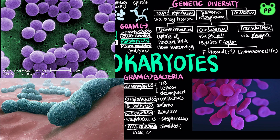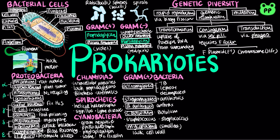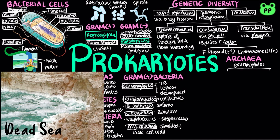Archaea are prokaryotes that share certain traits with bacteria and other traits with eukaryotes. The comparison among bacteria, archaea, and eukarya has been covered in a separate video titled "3 Domains of Life." Some archaea live in extreme environments and are called extremophiles.